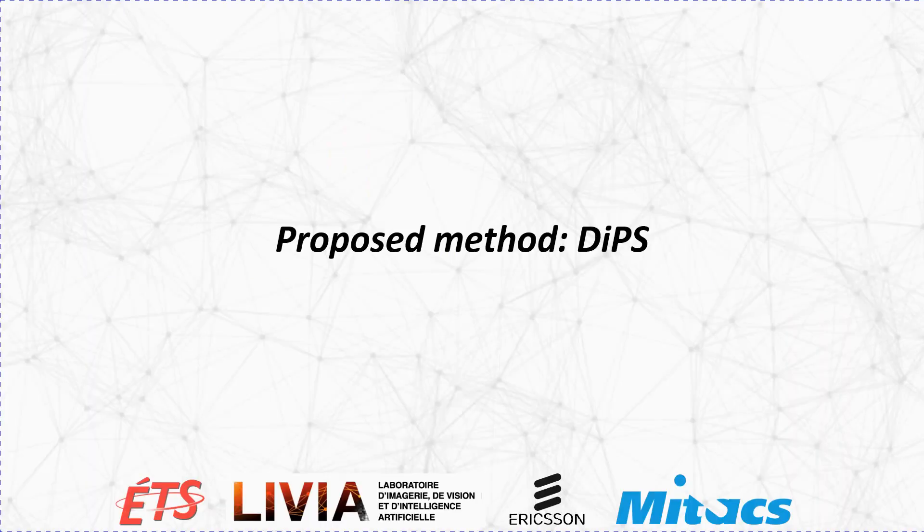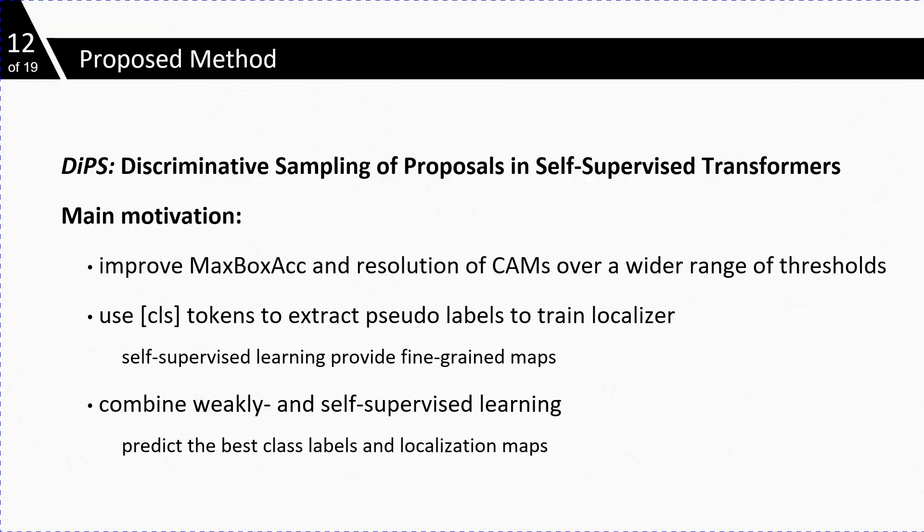Now come towards our proposed method, known as DIPs or discriminative sampling of proposals from self-supervised transformers. To deal with the above discussed issues, we propose our method named DIPs for generating pseudo-labels by sampling proposals from class tokens in self-supervised transformers.